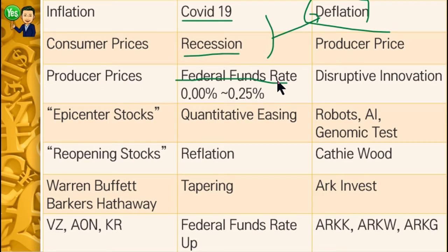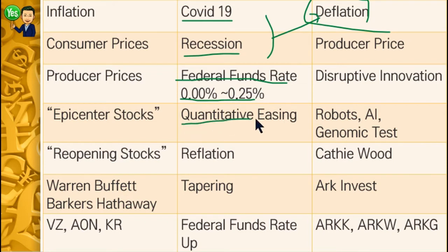They lowered the FED rate down to near zero — actually, to 0% to 0.25%. The other way, the FED started to buy mortgage-backed bonds and U.S. Treasury bonds. That way, the FED supported more cash to the banks, and banks supported businesses and people. We call this quantitative easing — in short, QE.